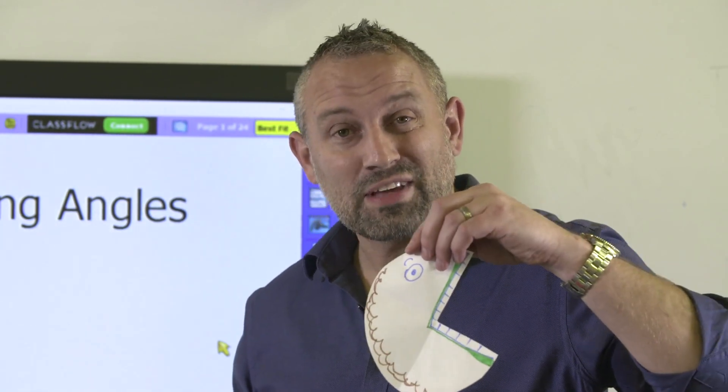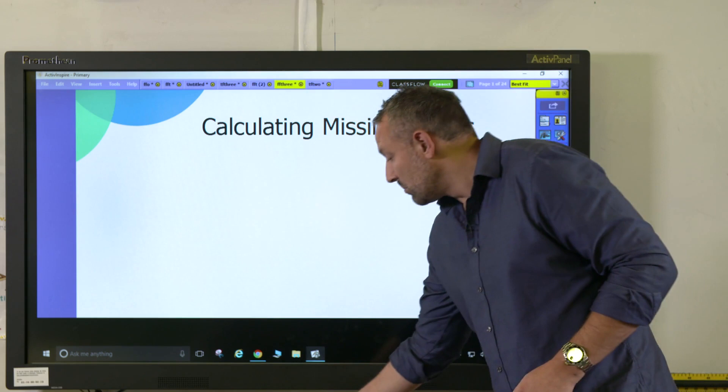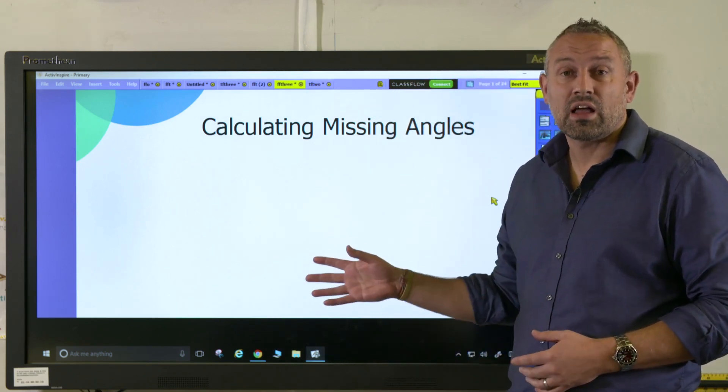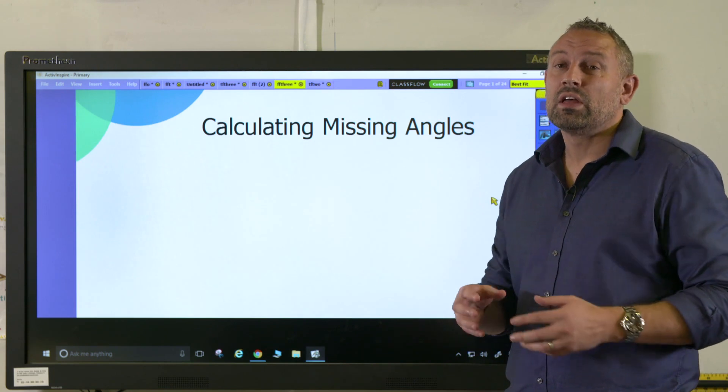Hi, my name is Ben. In this video we're going to be looking at how to calculate missing angles. In a previous video we've discussed the angle eater and angle turner, which are really useful for getting children to have a good understanding of what angles are and their angle names before we progress into calculating angles on a straight line or in a reflex angle.